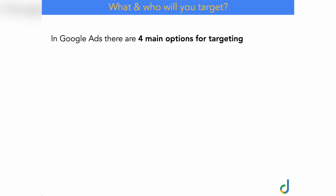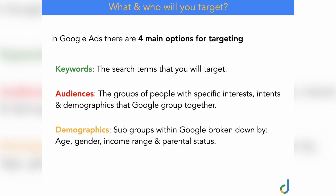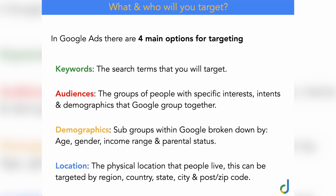As an overview, here are the four main options you have for targeting. With keywords, these are the search terms that you actually target. Audiences are groups of people with specific interests, intents, and demographics that Google has grouped together. Demographics are subgroups broken down by age, gender, income, and parental status. And finally, location — the physical location where people live.